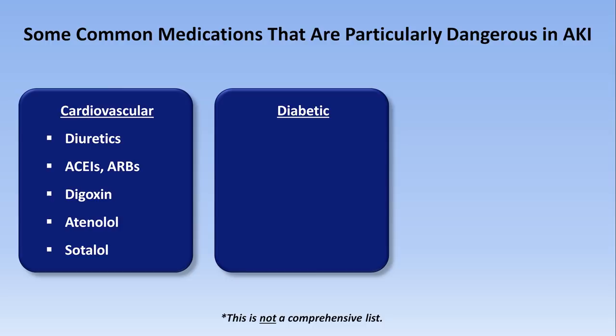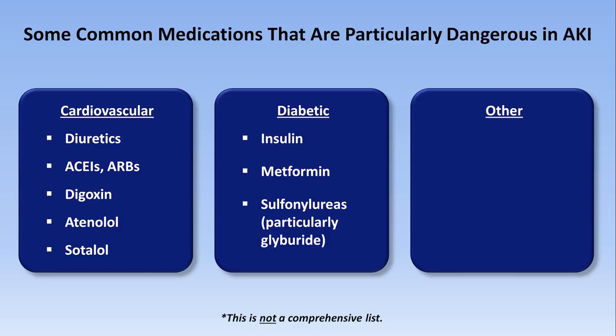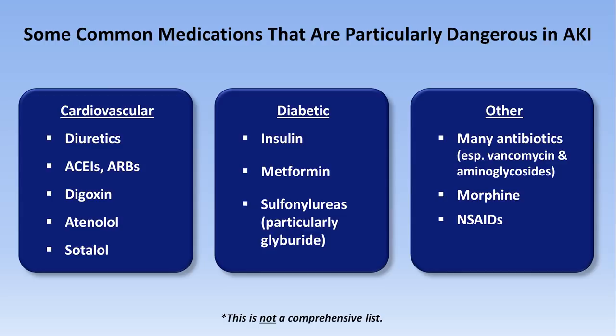Diabetes medications are another common problem in AKI. Insulin itself is renally excreted, so insulin doses may need to be lowered. Despite common belief to the contrary, metformin appears safe in chronic kidney disease, but its safety in acute kidney injury has not been established and it's strongly recommended to discontinue it. The sulfonylureas, particularly glyburide, are at higher risk of causing hypoglycemia in AKI. Of other medication classes, the biggest problems are seen with antibiotics — especially vancomycin and the aminoglycosides — morphine, which is renally cleared, NSAIDs, which are nephrotoxic via multiple mechanisms, and lithium, which is renally cleared and has a very narrow therapeutic window.